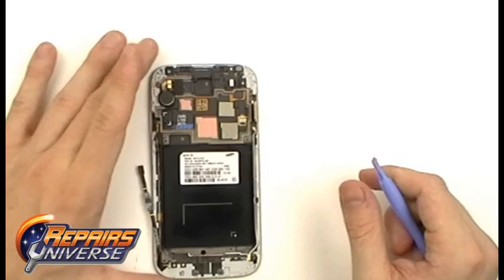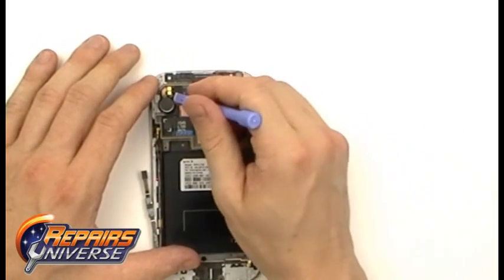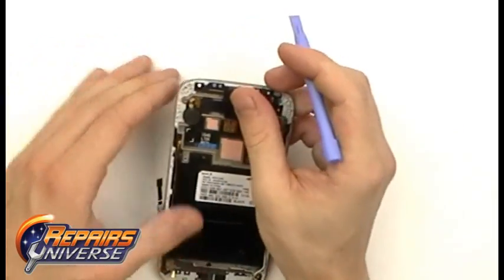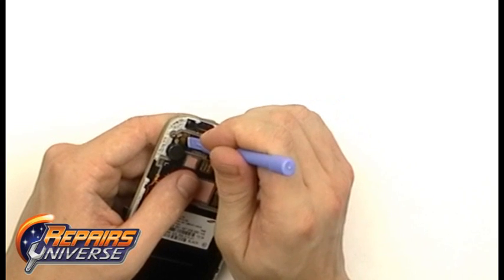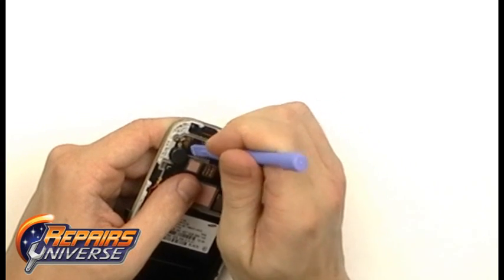We then suggest removing the vibrate motor, which is located up here in the top left. Simply use the pry tool to gently lift up the adhesive holding the flex cable to the housing.